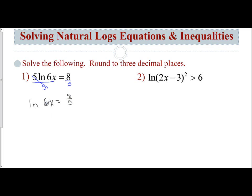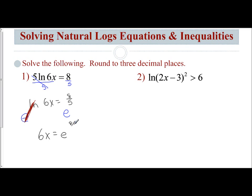Now that my natural log is isolated by itself, I can apply the inverse operation, which is to make the left side and the right side the powers of e. So e to the natural log of 6x is equal to e to the 8 fifths. That allows my natural log and e to cancel each other out. And so I get 6x equals e to the 8 fifths power.